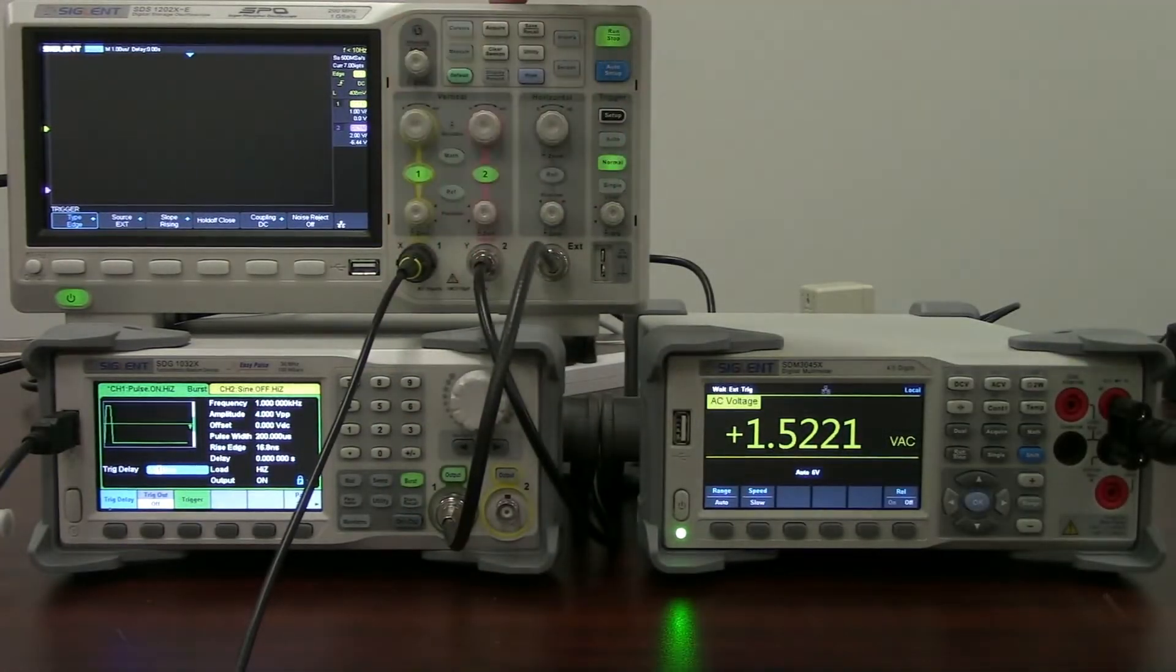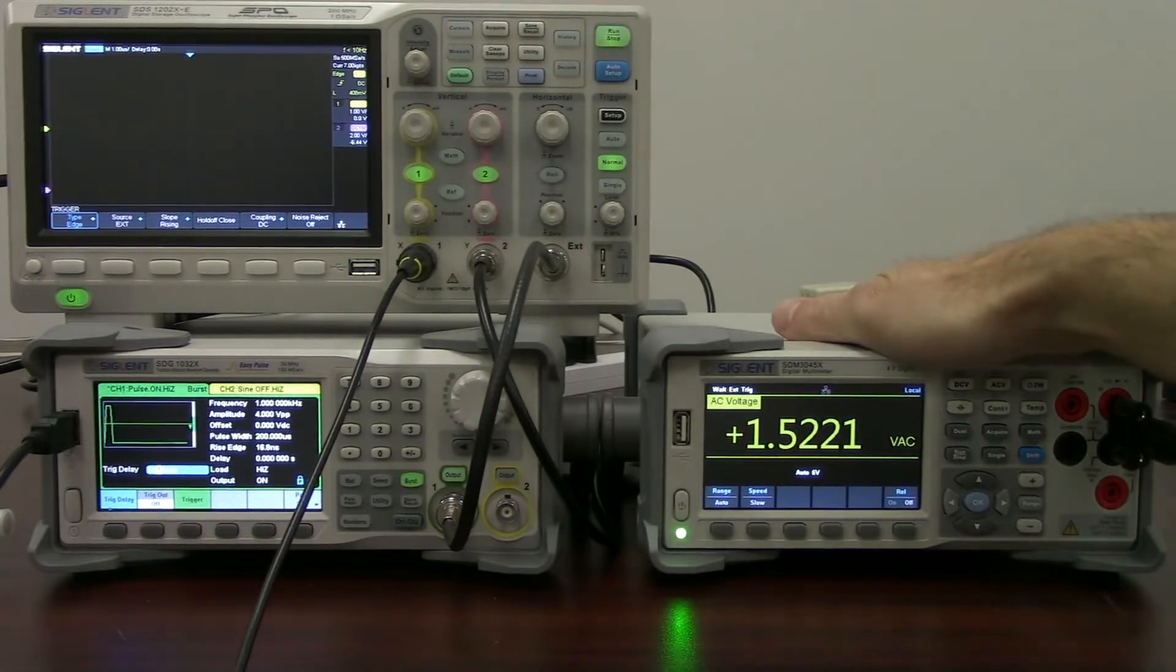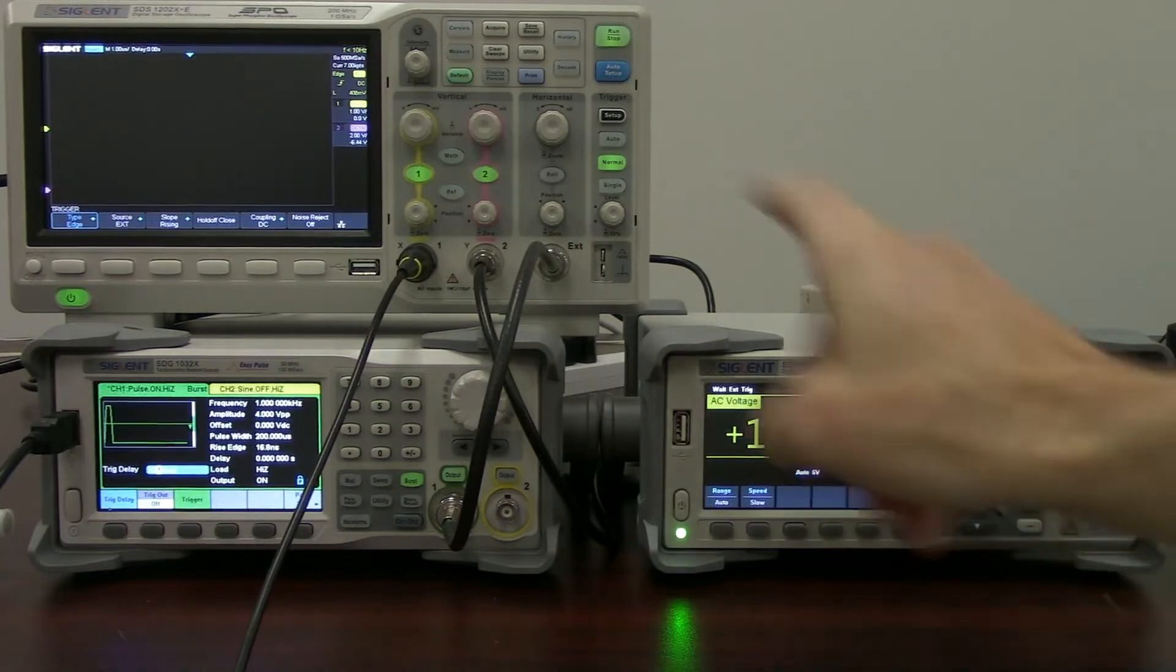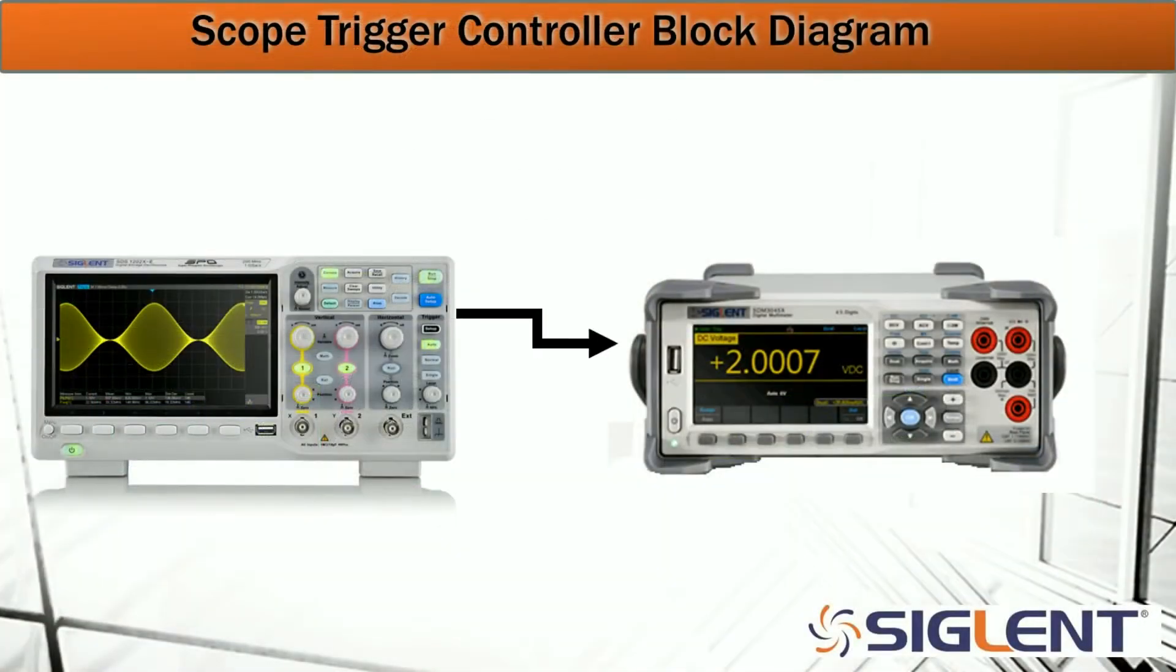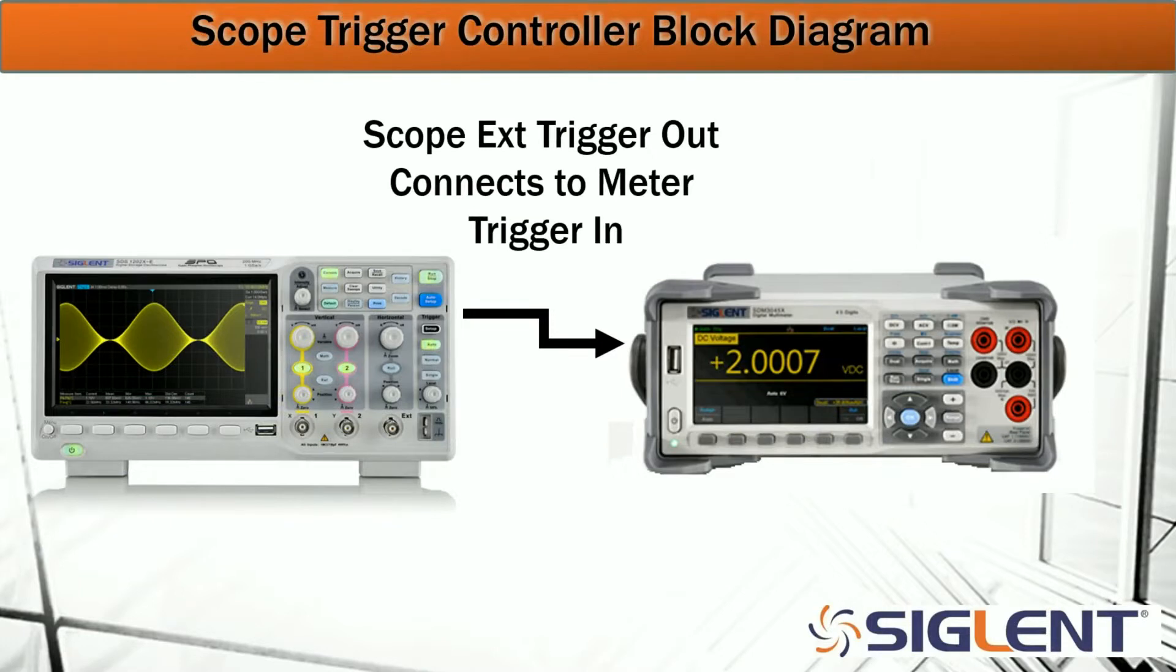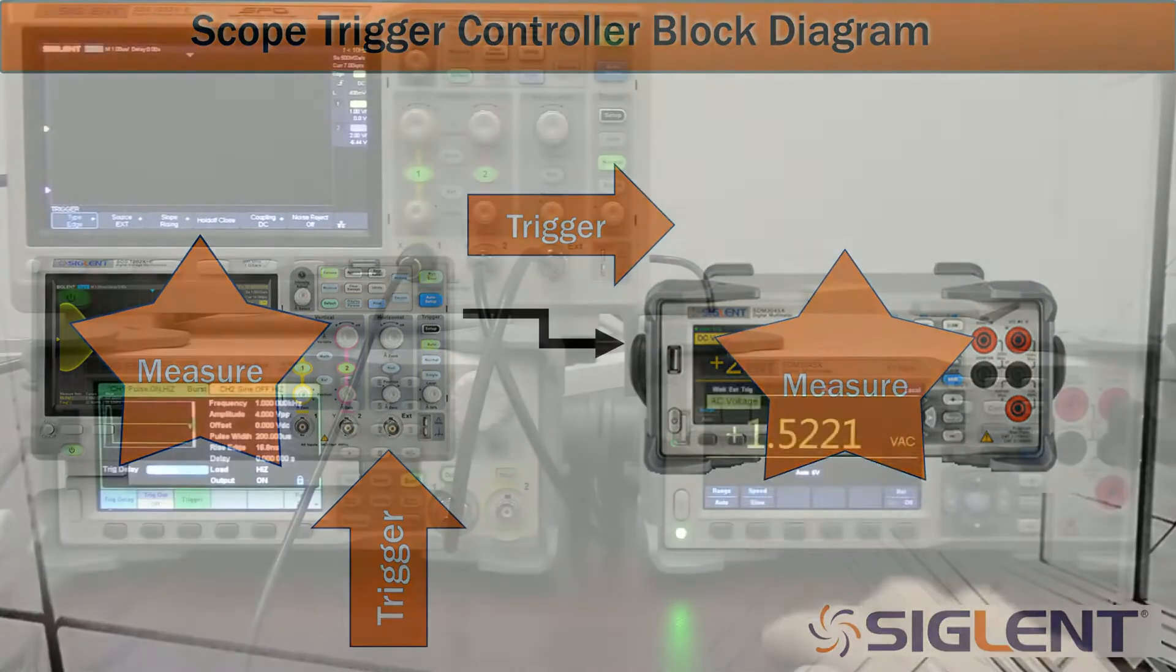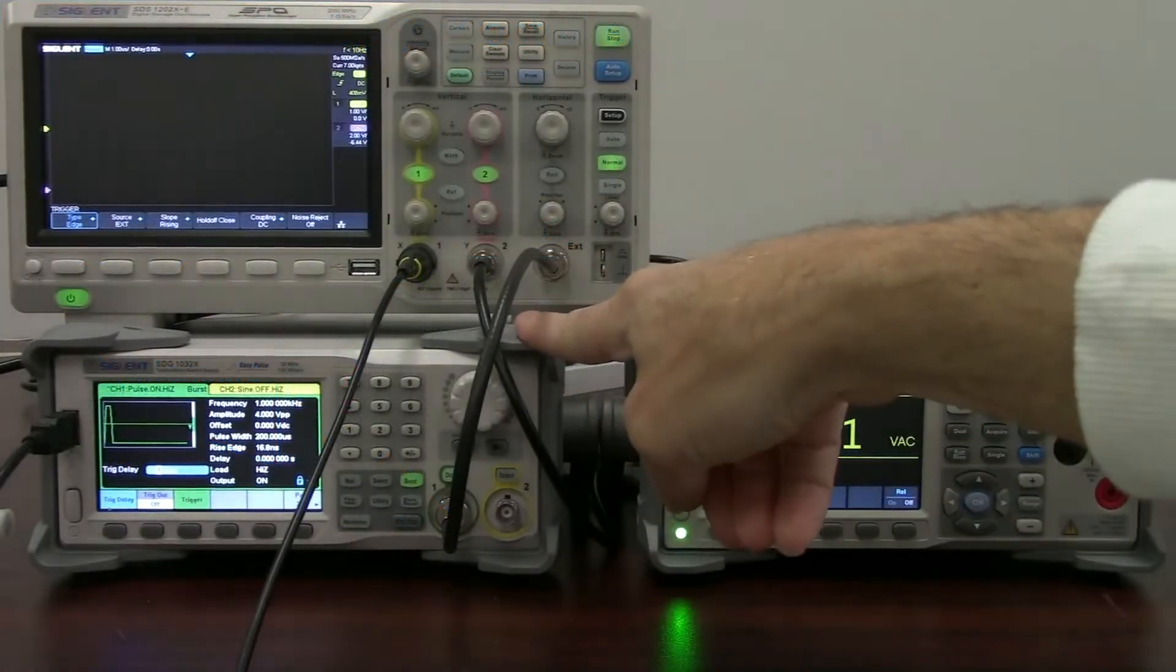The oscilloscope is then going to have its external trigger connected to this digital multimeter. This is the SDM3045X. So the oscilloscope is going to trigger, measure on channel 1 and channel 2, and simultaneously send a trigger output to the multimeter so that it can make an AC voltage measurement. And all of those are going to be synchronized.